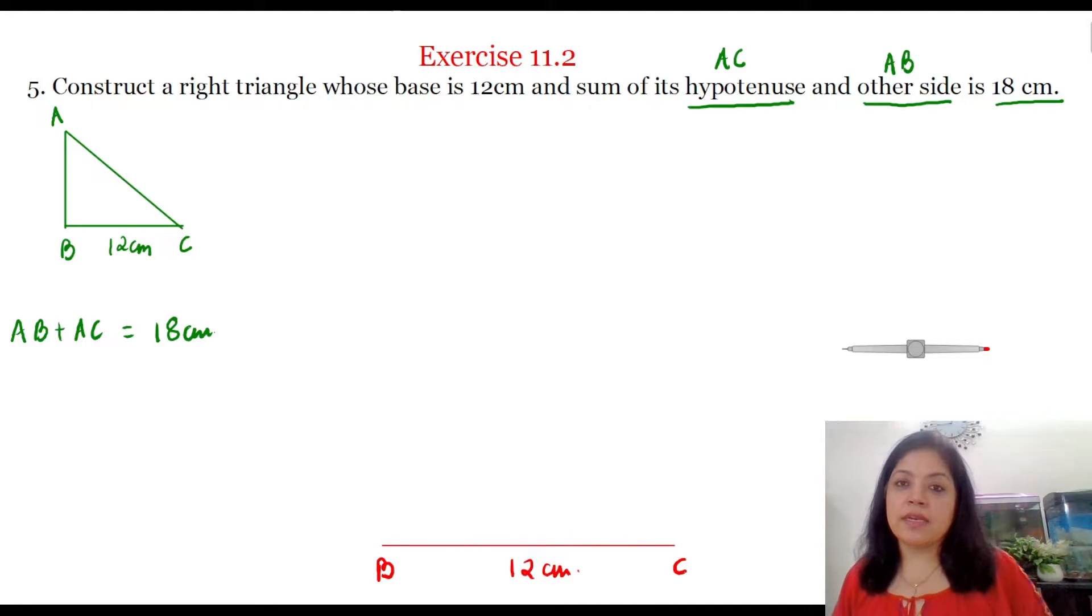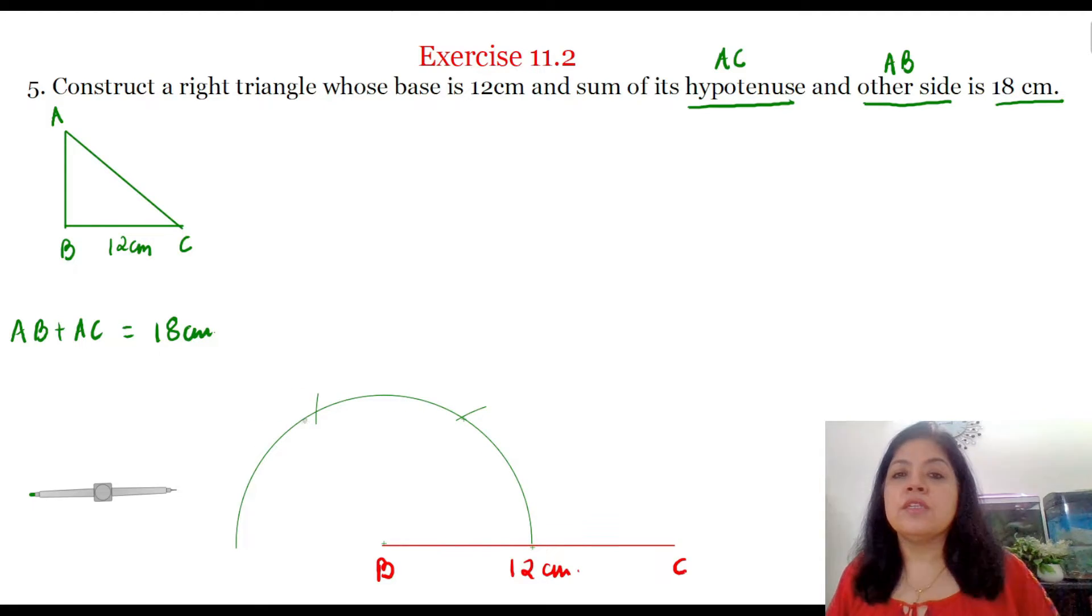Now we will construct 90 degree angle at B with the help of compass. So place your compass at B and with any convenient radius draw an arc which touches the line BC. We will place this compass at this point and draw two arcs cutting the previously drawn arc at two different points. Let these two points be M and N.